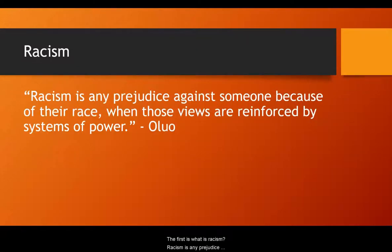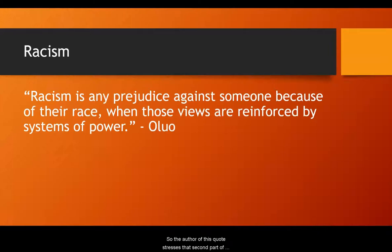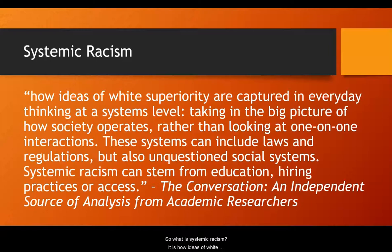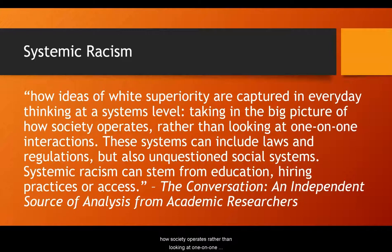The first term is: what is racism? Racism is any prejudice against someone because of their race when those views are reinforced by systems of power. The author stresses that second part of the definition — it's not racism if there is no oppression by those in power. Systemic racism is how ideas of white superiority are captured in everyday thinking at a systems level, taking in the big picture of how society operates rather than looking at one-on-one interactions. These systems can include laws and regulations, but also unquestioned social systems.